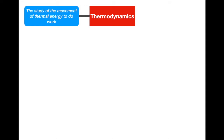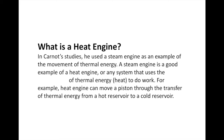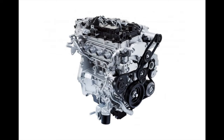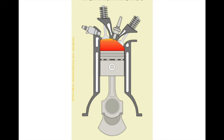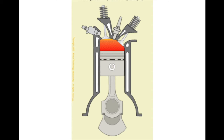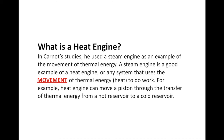In our next section we're going to talk about heat engines — the concept that Carnot used in determining the beginnings of thermodynamics. In Carnot's studies, he used a steam engine as an example of the movement of thermal energy. A steam engine is a good example of what we call a heat engine — any system that uses the movement of thermal energy, or heat transfer, to do work. Even today, car engines use the concepts of thermodynamics — compression, combustion, exhaust, and movement of gases cause work to be done.